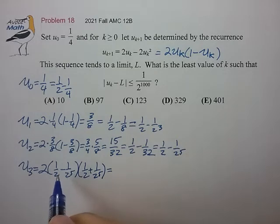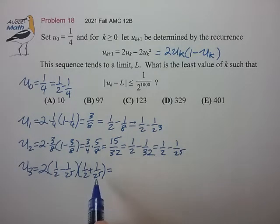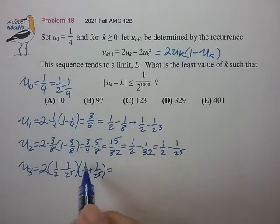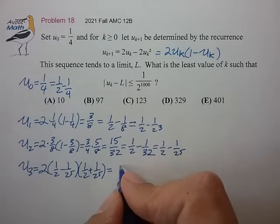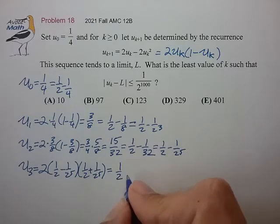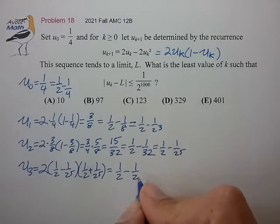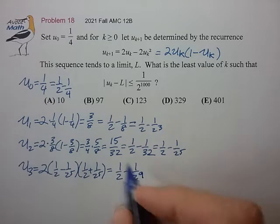And what this does now is it cancels the cross term. So 1 half times 1 over 2 to the fifth cancels 1 half times minus 1 over 2 to the fifth. So this works out nicely as 1 half minus 1 over 2 to the ninth.